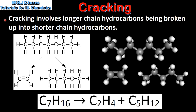Cracking involves longer chain hydrocarbons being broken up into shorter chain hydrocarbons. Here we have an example in which a longer chain hydrocarbon, C7H16, is broken up into two shorter chain hydrocarbons: C2H4, which is ethene, and C5H12, which is pentane. As you can see, there are the same number of carbon and hydrogen atoms in the reactants and the products.